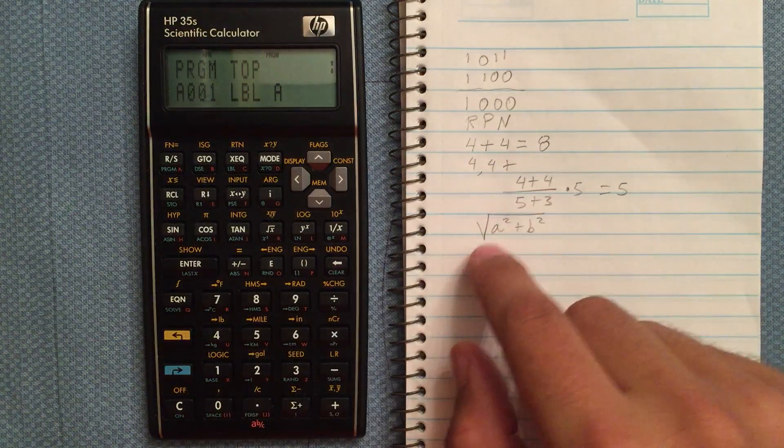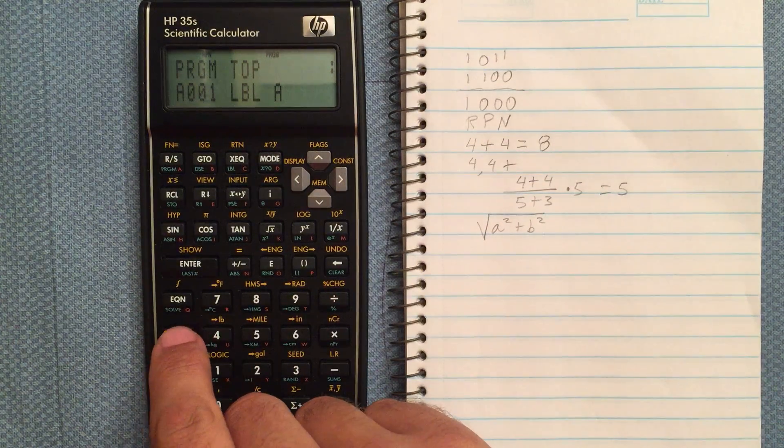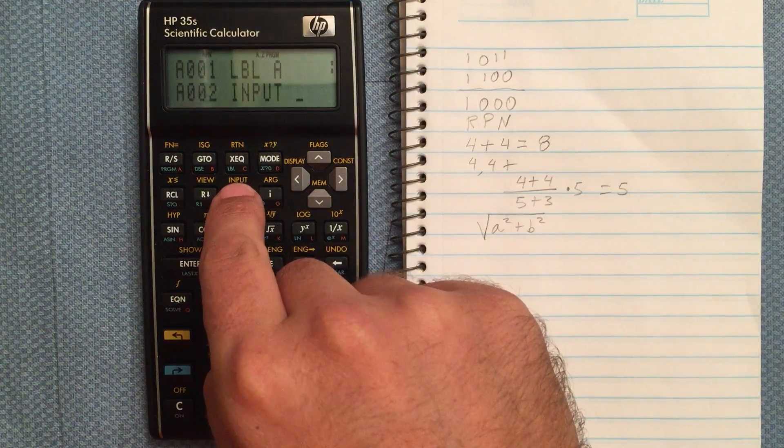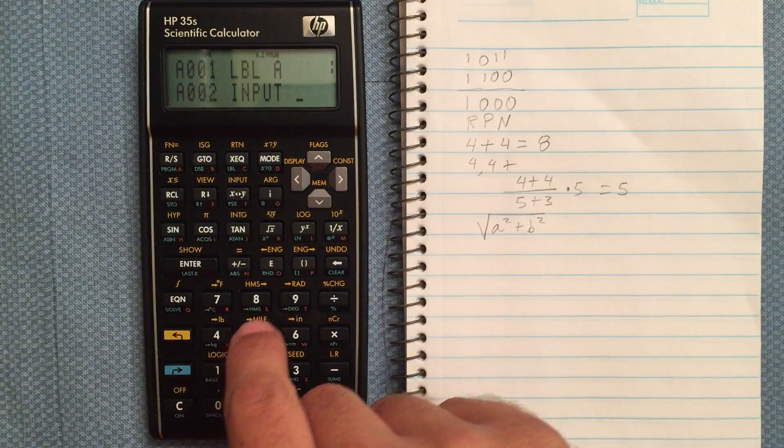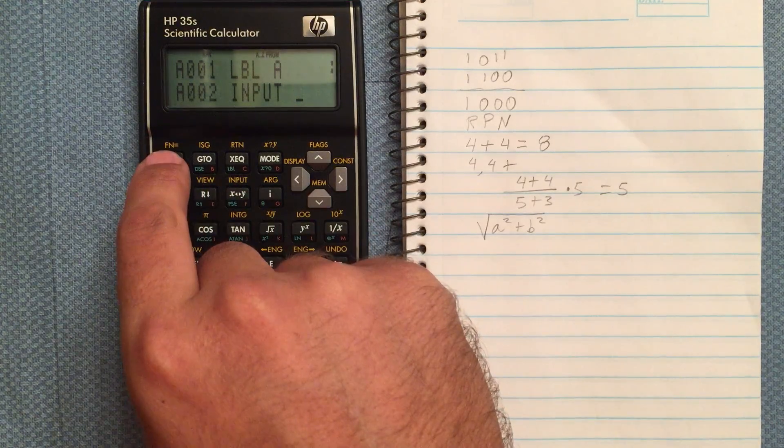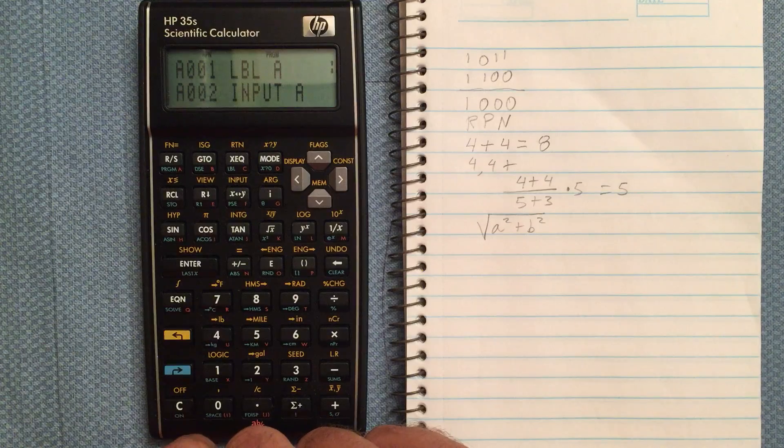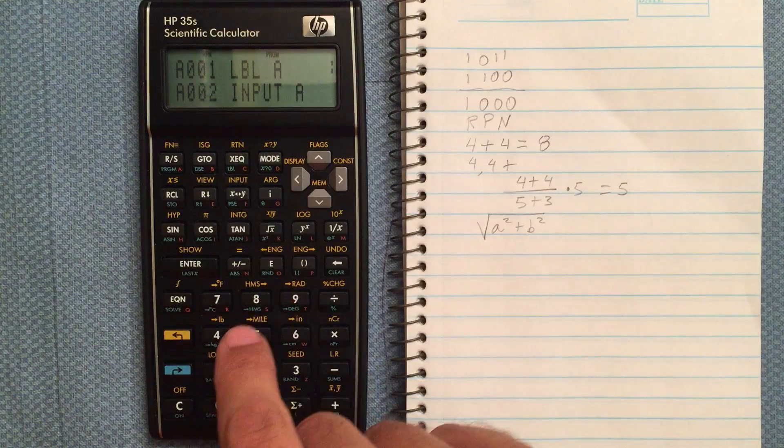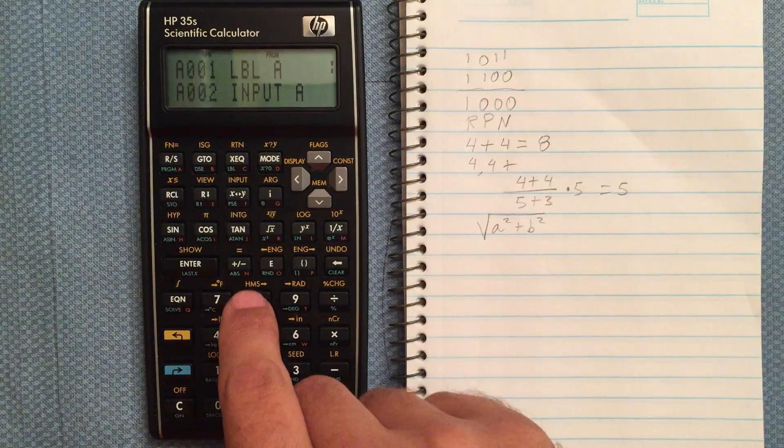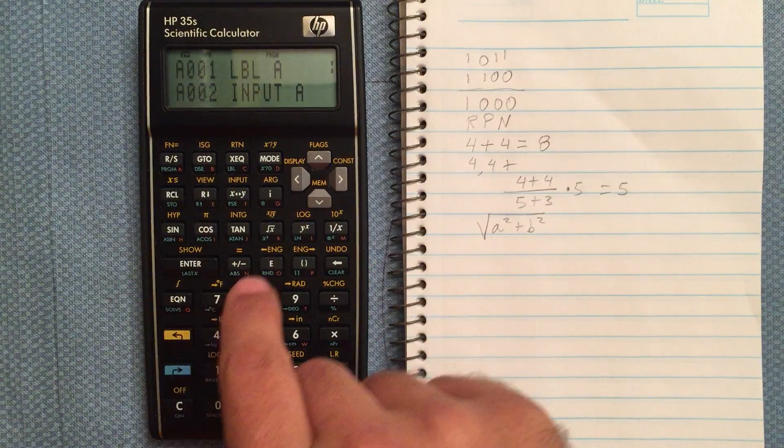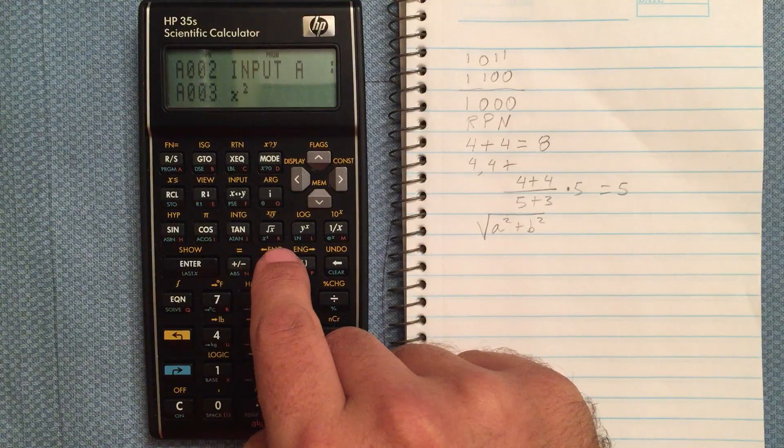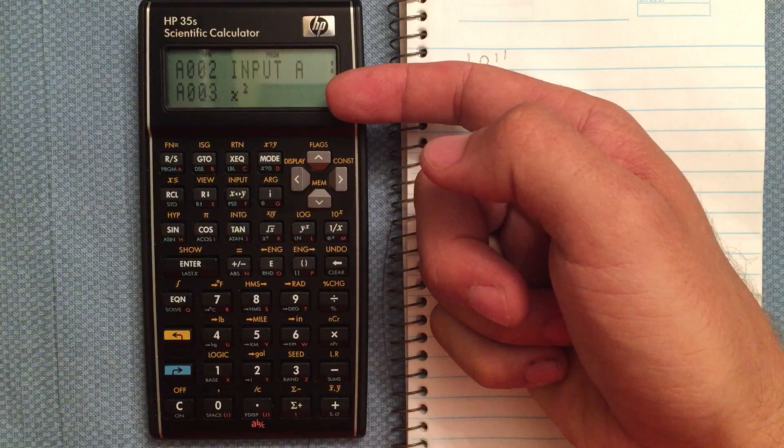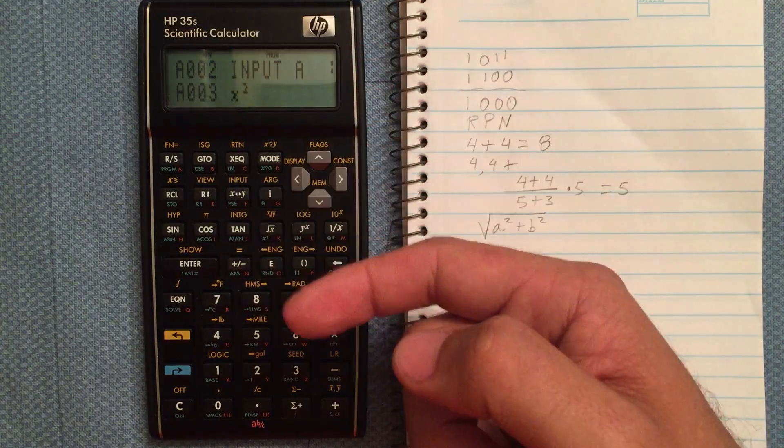So first, let's input A. If I go to gold and then input, that will prompt the user to input A. Let's take that result and square it. So let's go to blue shift and then square it. Input A puts the number that the user puts in into the x register, and then we just squared it.